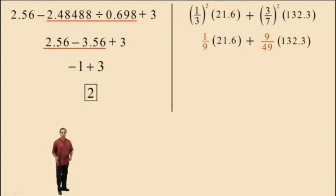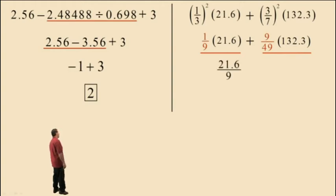Now we have to perform the multiplication before we perform the addition. Now if you write 21.6 as a fraction, meaning putting it over 1, and you multiply 1/9 times 21.6 over 1, you get 21.6 divided by 9. And don't forget we have to add. Similarly, if we write 132.3 as a fraction by putting it over 1, and then multiplying by 9/49, we get 9 times 132.3 divided by 49.